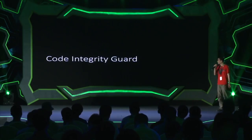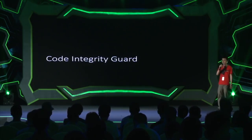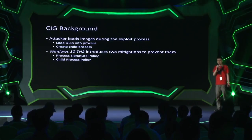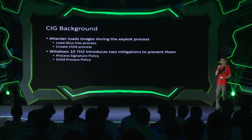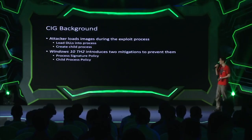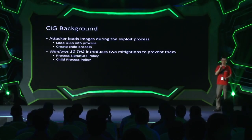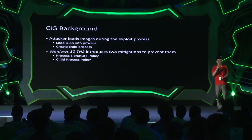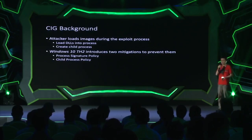The first one I'm going to talk about is Code Integrity Guard. After compromising the process using shellcode, an attacker can load a DLL into the compromised process, or create an evil process to execute a larger amount of code, because this way it's easier to write than shellcode.